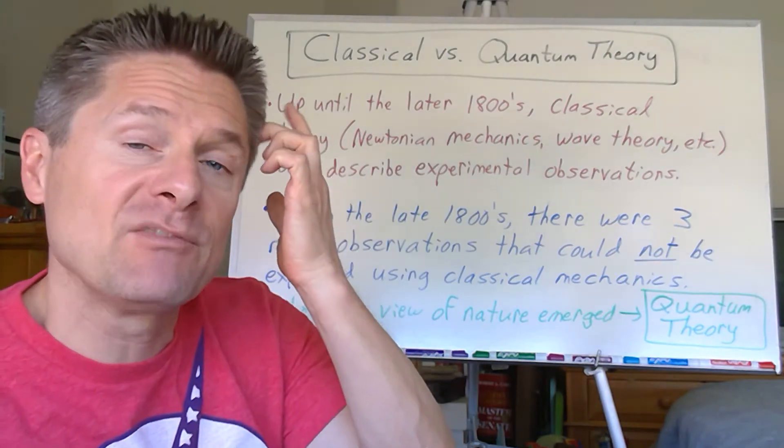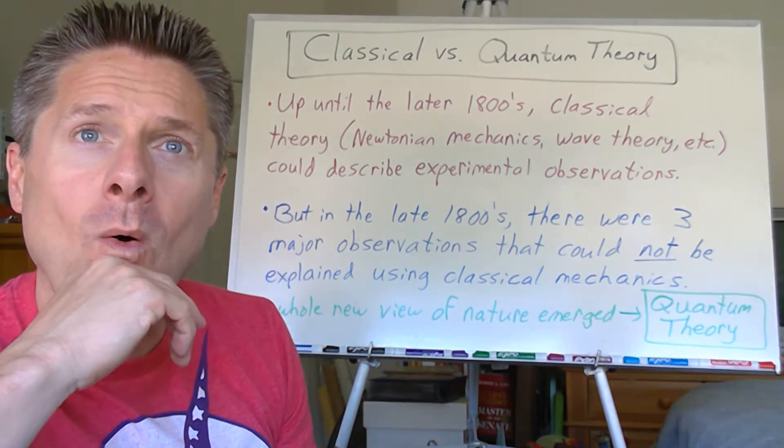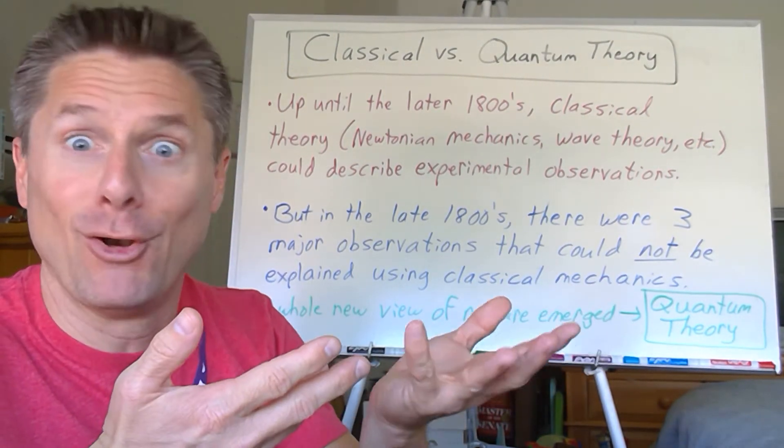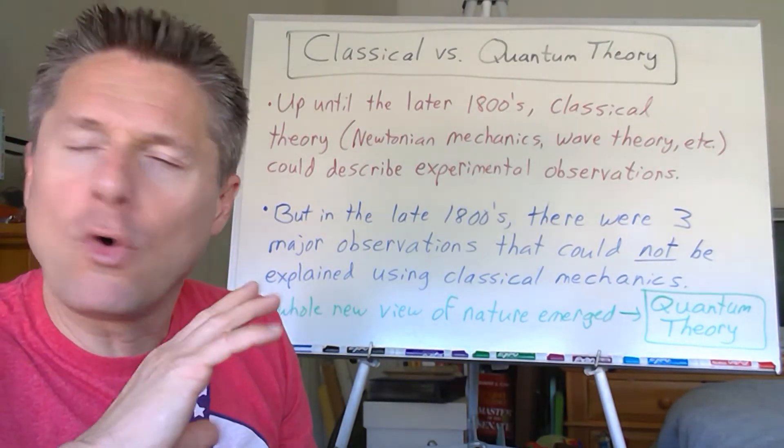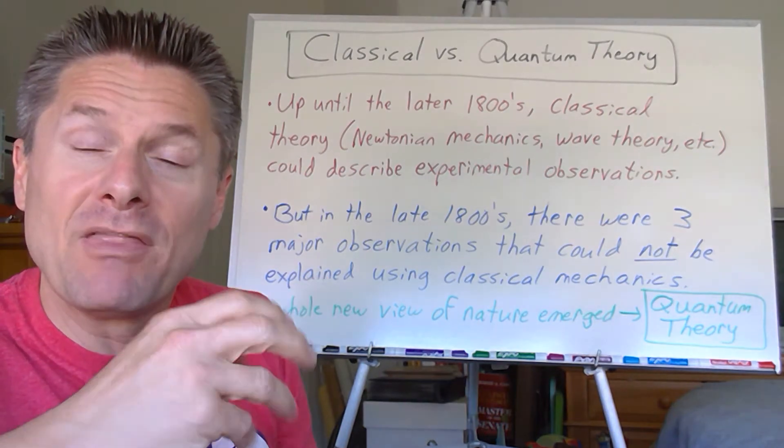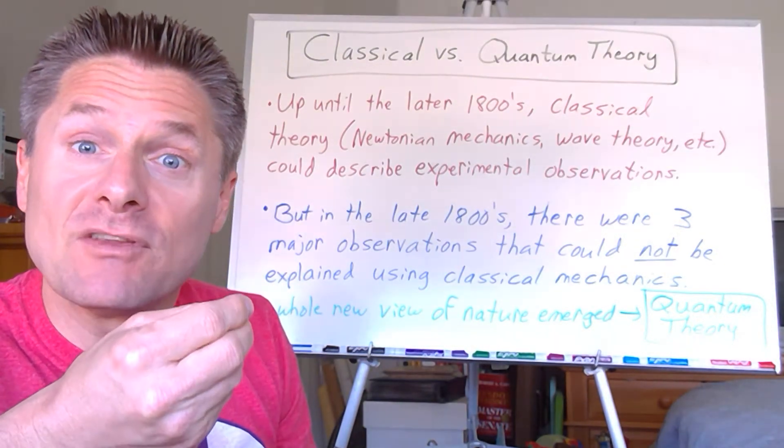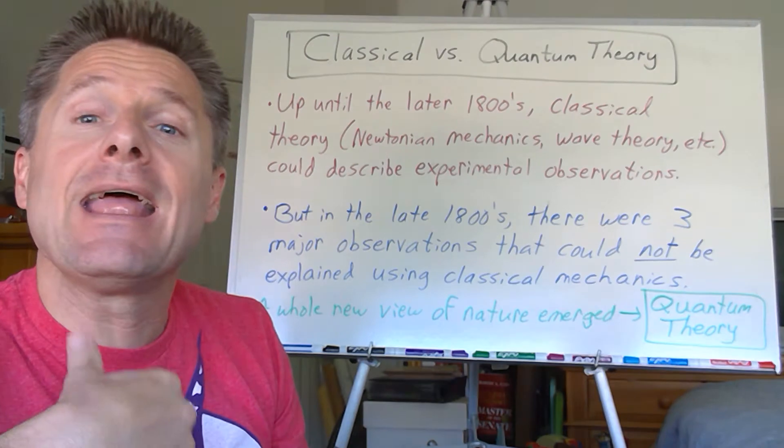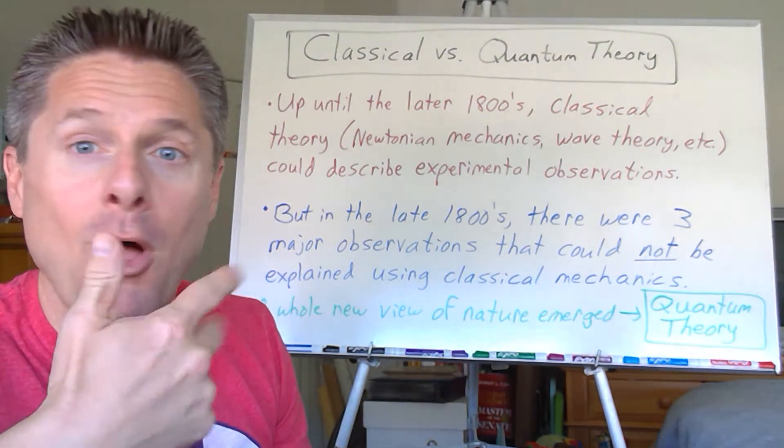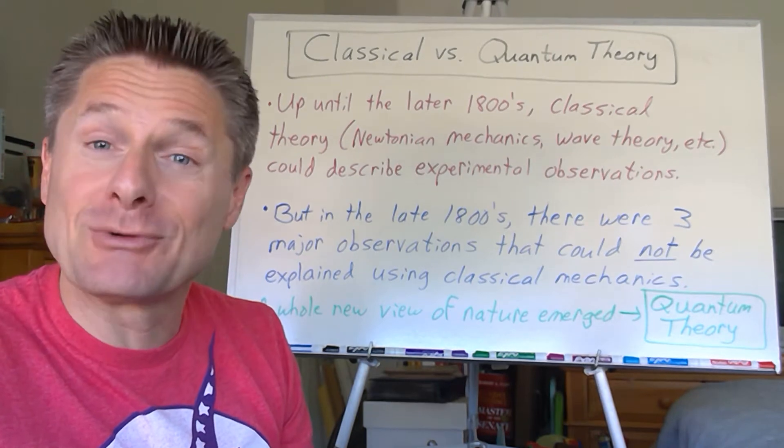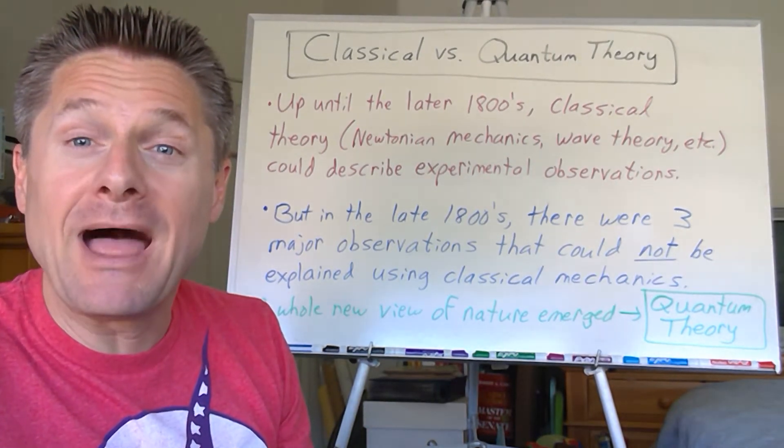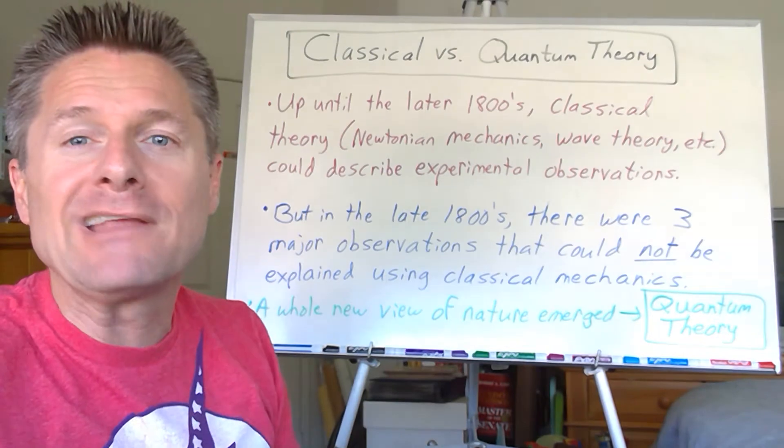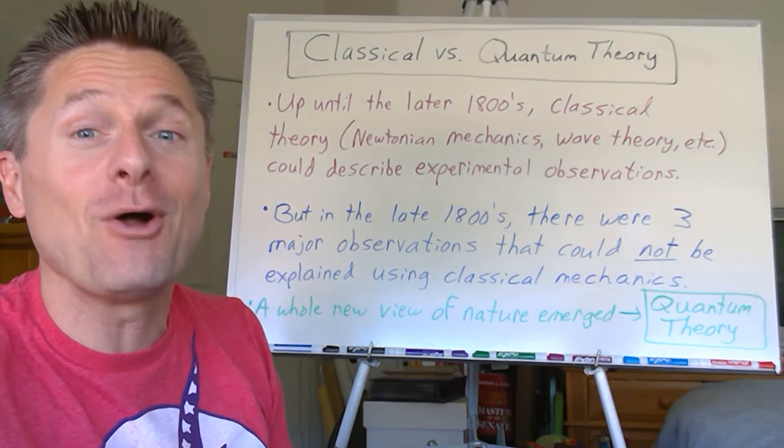And then we'll look in great detail at these three different experiments or observations and how applying classical theory didn't work, why it failed. This is what they predicted. This is what the experiment saw. They went, oops, the old crap moment. And then when somebody actually applied a totally radical different way of thinking called quantum mechanics, their theory was able to match the experimental observations. And everybody was like, whoa, crazy. How is that even possible?